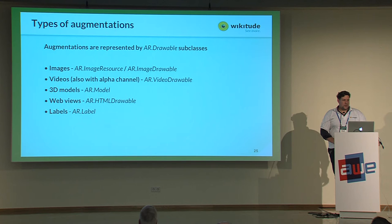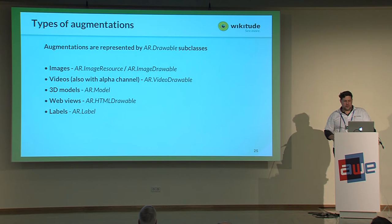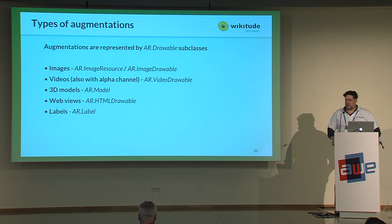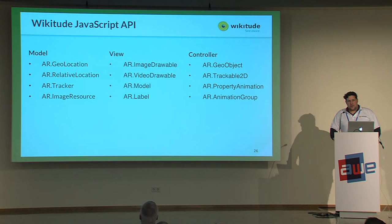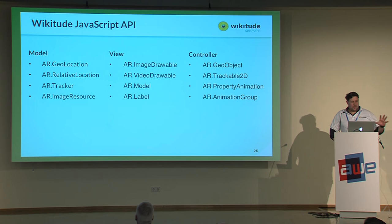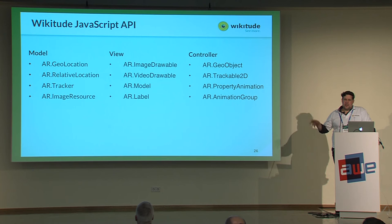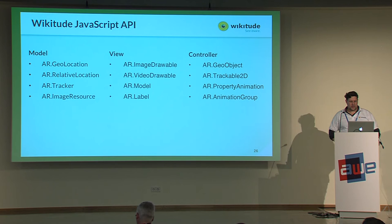Working with the JavaScript API, you define augmentations called Drawables. There are several drawable types: images, videos, 3D models, HTML content or web views, and labels. We've applied an MVC pattern in the API. Data models include geolocation, relative location, tracker, and image resource. The view representation includes image drawables, video drawables, AR models, and labels. The controller unifies the business logic with geo-objects and trackable 2Ds.